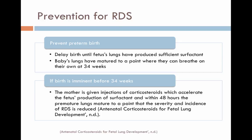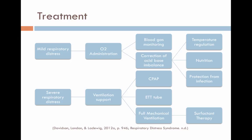Within 48 hours, the premature lungs have matured further. Newborns with mild respiratory distress may require only supplementary oxygen. Their supportive treatment includes blood gas monitoring, correction of acid-base imbalance, temperature regulation, nutrition, and protection from infection.